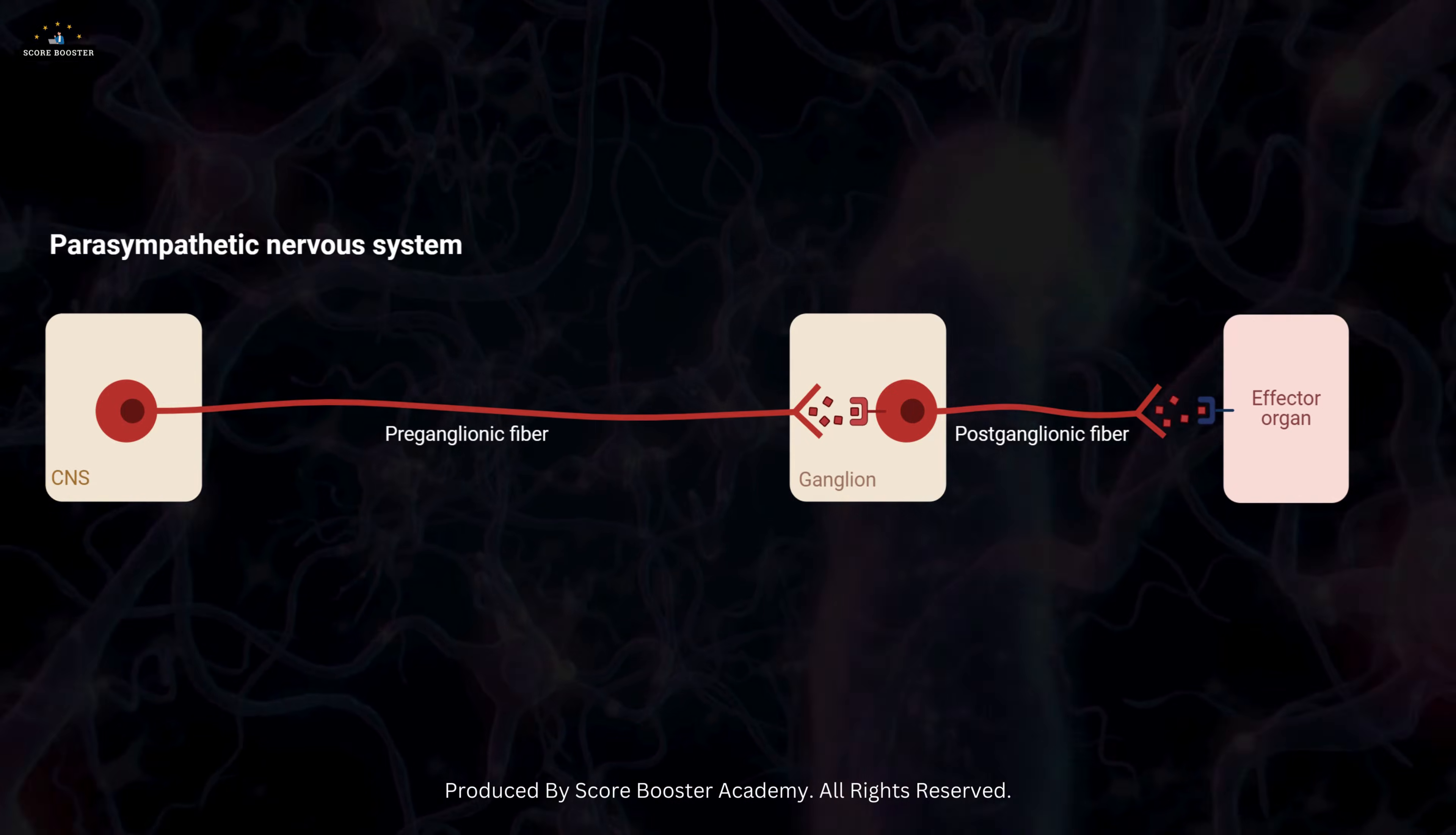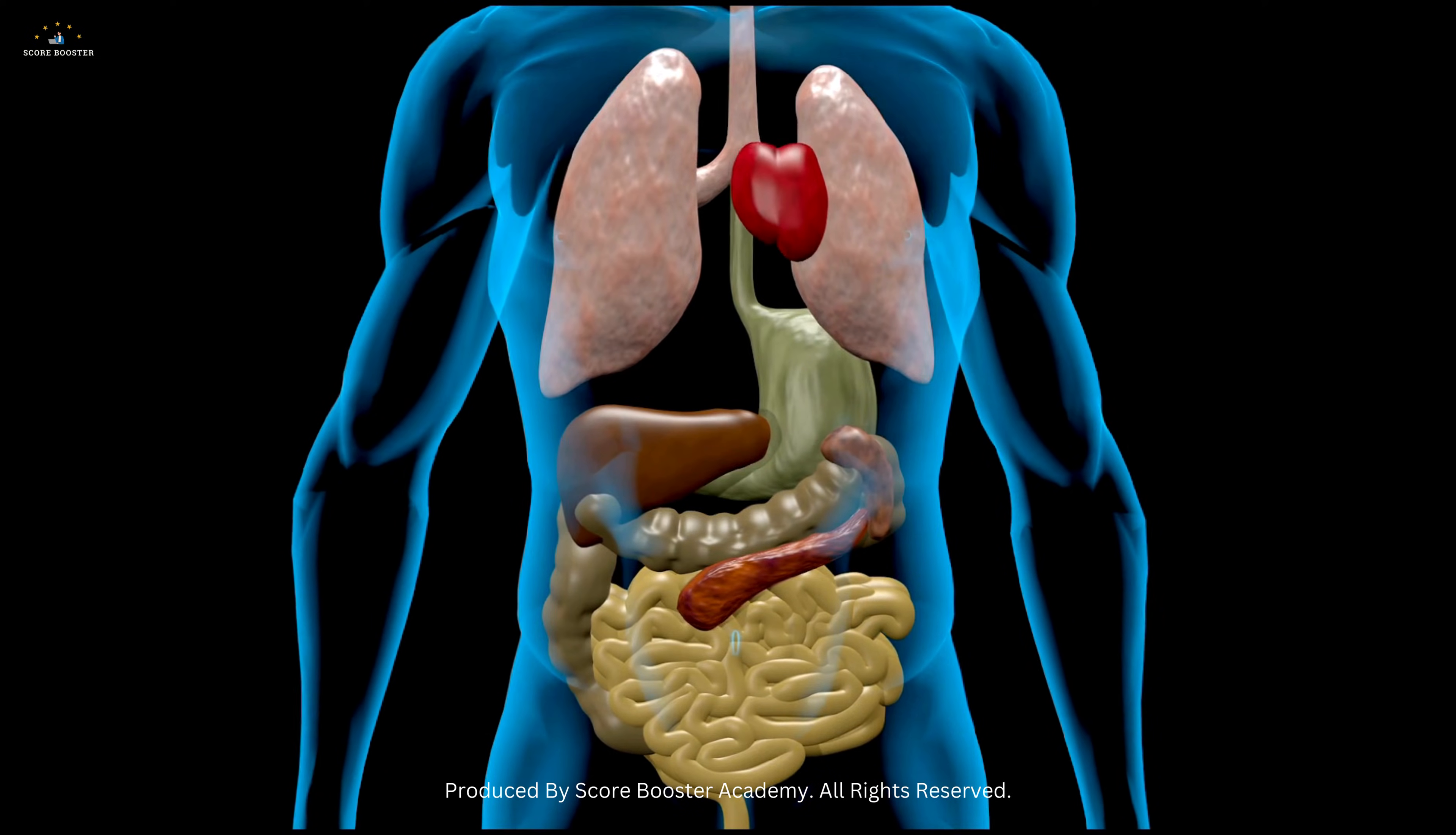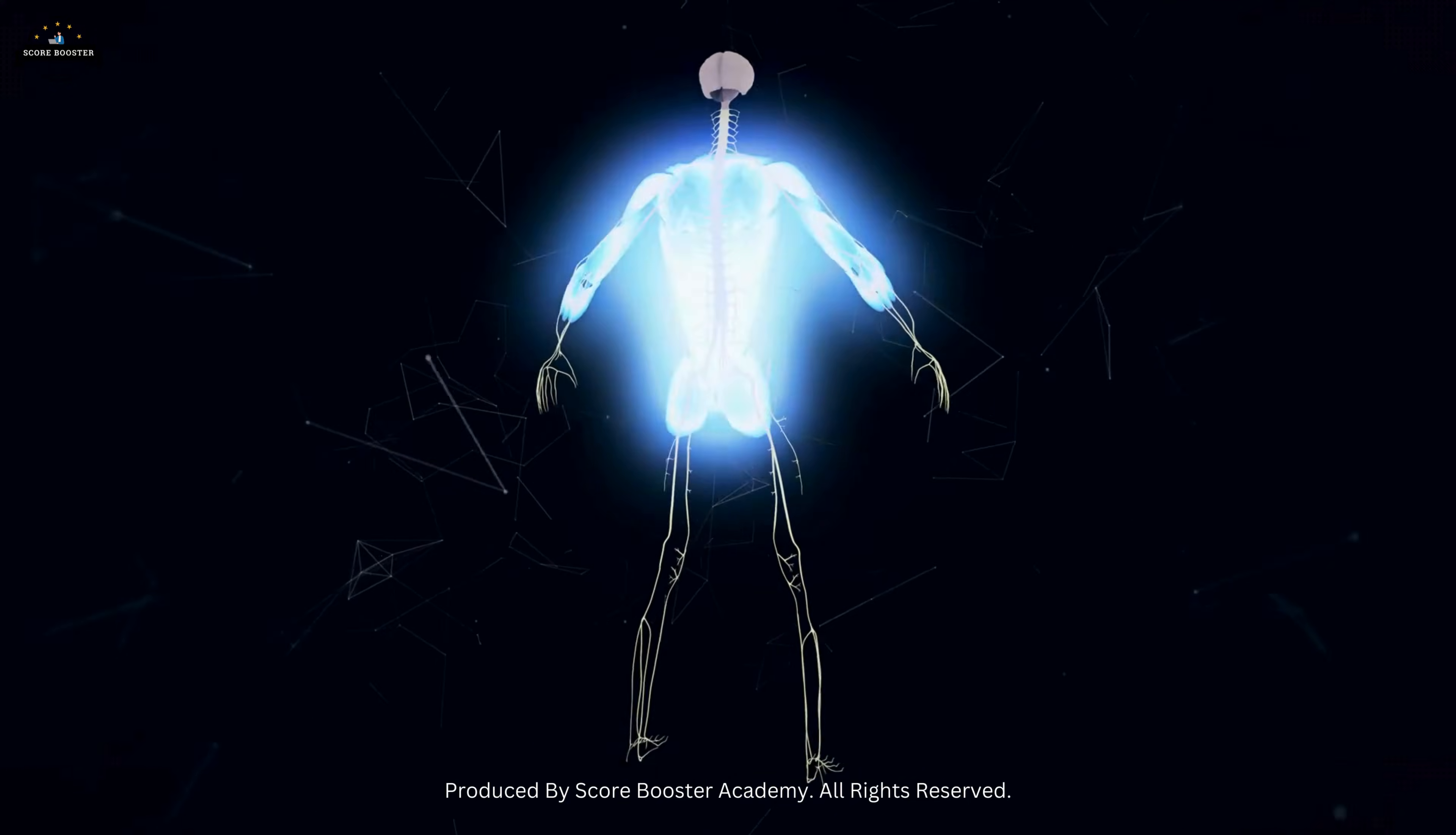The parasympathetic system, also known as the rest and digest response, calms the body after a stressful event, slowing the heart rate and aiding digestion. This balanced regulation by the peripheral nervous system ensures our body functions smoothly, adapting to various situations.